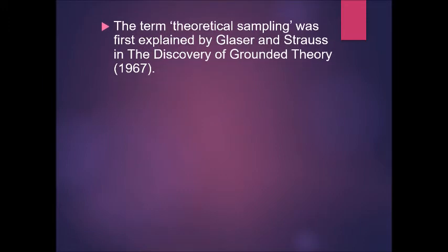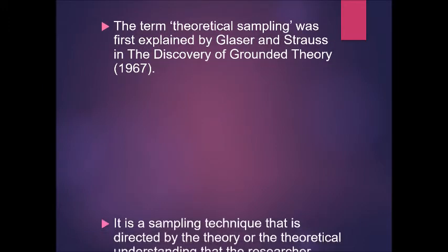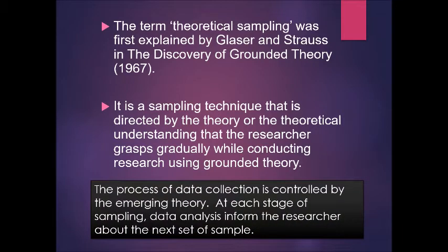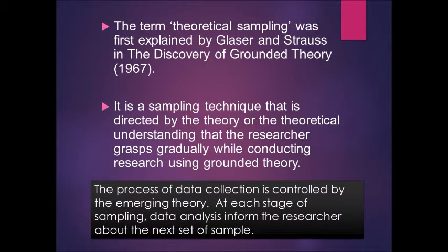Theoretical sampling was first explained by Glaser and Strauss in The Discovery of Grounded Theory in 1967. It is a sampling technique that is directed by the theoretical understandings that the researcher grasped gradually while conducting research using grounded theory. The process of data collection is controlled by the emerging theory, and at each stage of sampling, data analysis informs the researcher about the next step of the sample.